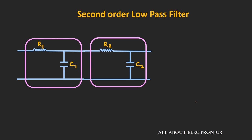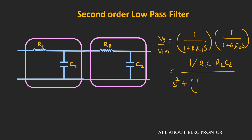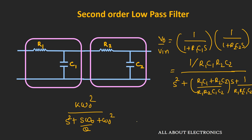If we cascade two such filters, then Vout/Vin equals [1/(1 + R1C1·s)] × [1/(1 + R2C2·s)]. Rearranging this expression gives a denominator involving R1C1·R2C2·s² + (R1C2 + R2C2)·s + 1. Comparing this with the generalized second order filter expression, we can see that ω₀ = 1/√(R1·R2·C1·C2), confirming the transfer function of any second order low pass filter takes this standard form.